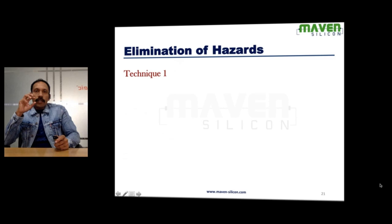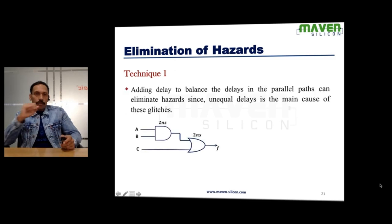Now, let's see how to avoid these hazards. You have the circuit. Look at here. There are various paths A to F, B to F, C to F.